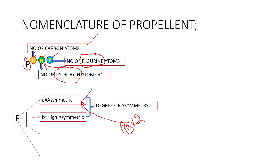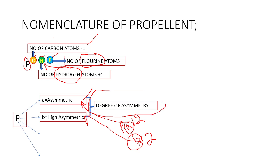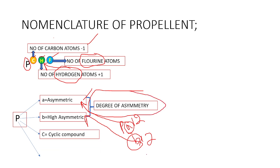If the letter 'b' follows the propellant name, such as P42b, it indicates the propellant is highly asymmetric. So 'a' and 'b' simply represent the degree of asymmetry. If the letter 'c' is present, it indicates a cyclic compound.